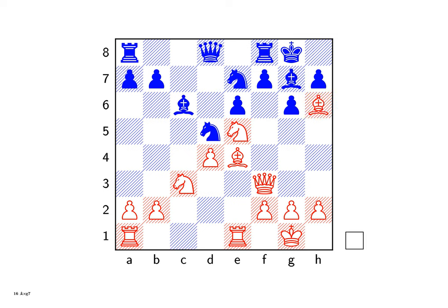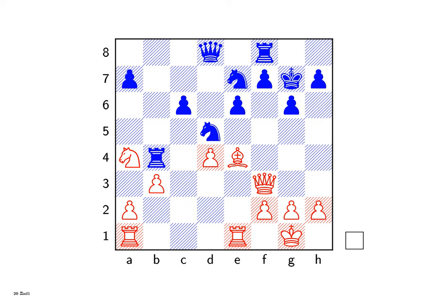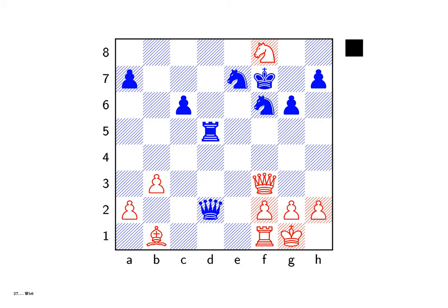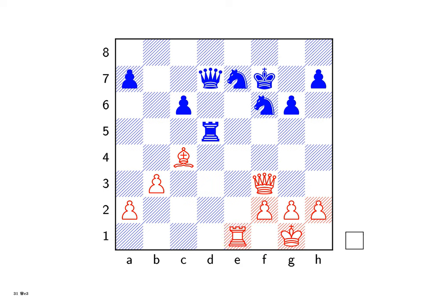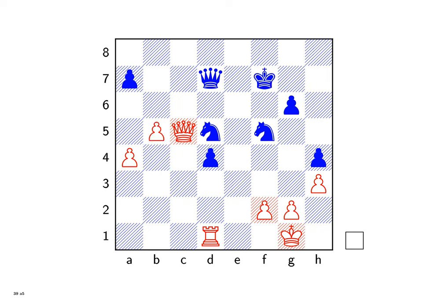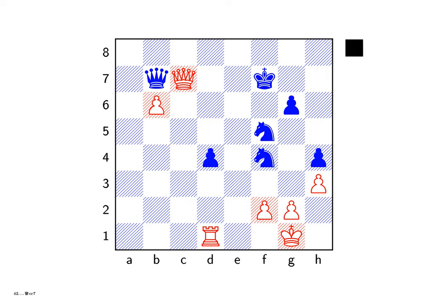Chapter 2 – Space and Time. Stephen Hawking delves into the fundamental concepts of space and time, exploring how our understanding of these dimensions has evolved. Hawking begins by discussing Isaac Newton's views: according to Newtonian mechanics, space and time were considered absolute and independent entities. Space was seen as a three-dimensional stage where events occurred, and time was a separate, linear continuum that ticked away uniformly. Newton's laws of motion and universal gravitation were based on this concept of absolute space and time, providing a clear and predictable framework for understanding physical phenomena.